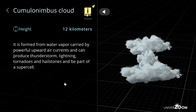Cumulonimbus cloud, height: 12 kilometers. It is formed from water vapor carried by powerful upward air currents and can produce thunderstorm, lightning, tornadoes and hailstones and be part of a supercell.